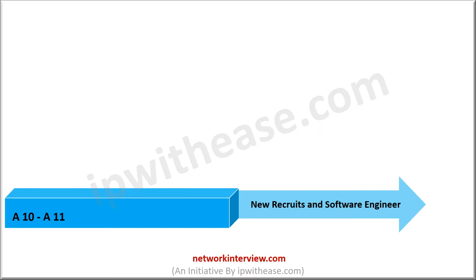The technical chain of command begins with bands A10 and A11, which include new recruits and software engineers. If you are a new graduate with no prior experience, you will be positioned in these two bands. The first covers your training period where you learn and adapt to the organizational culture. Then after six months or a year, you will be promoted to software engineer and assigned tasks and projects. The average annual salary of a software engineer in HPE is estimated at 9 lakhs INR.